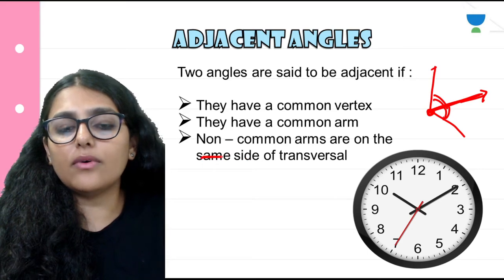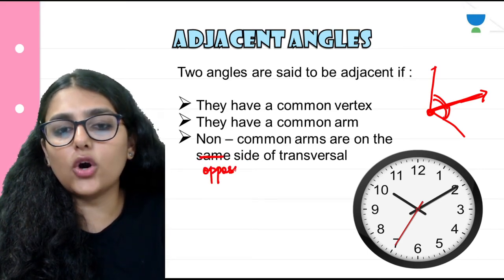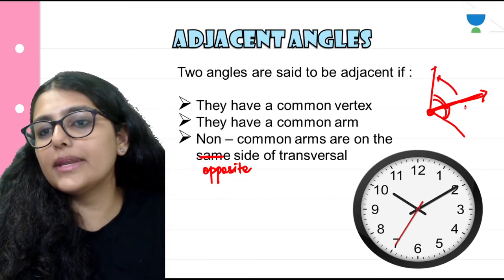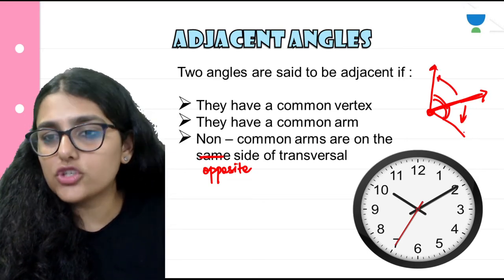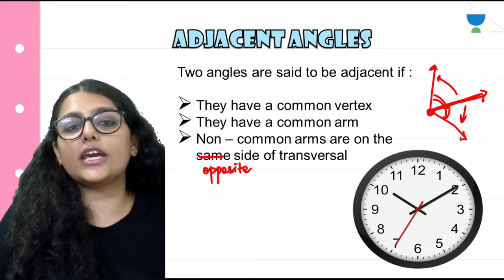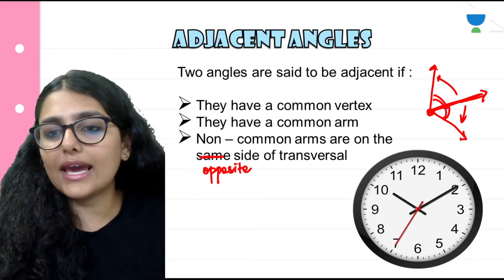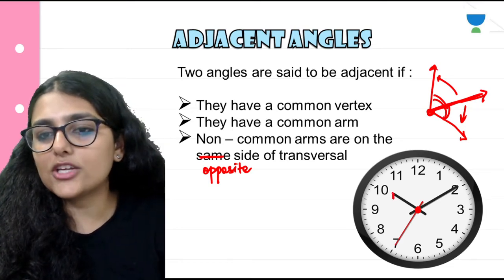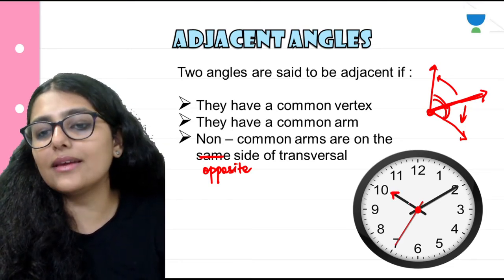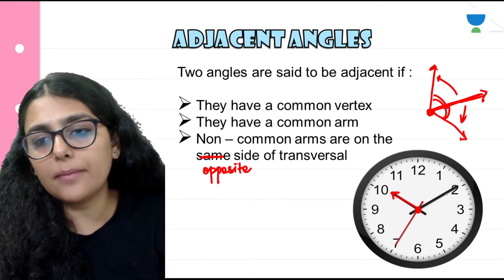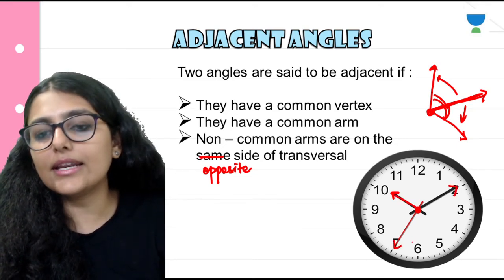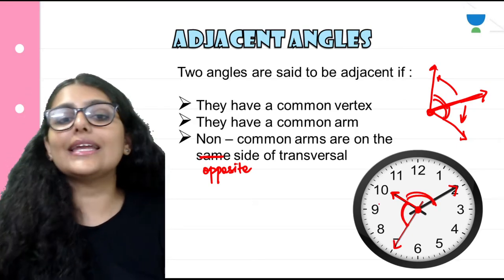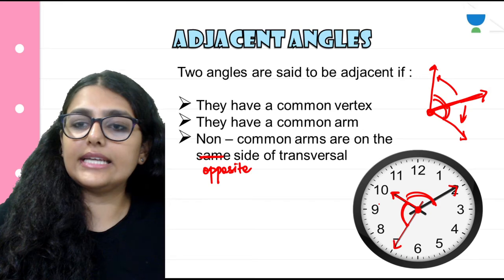The non-common arms are on the opposite side of the common arm. Just as an example, we take a clock. All three hands have one meeting point. The hour hand is the common arm, and the minute hand and second hand are the non-common arms. Two angles are formed here, and both are called adjacent angles.